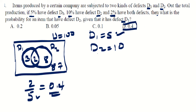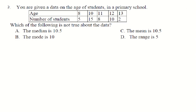The next question: data on the age of students in a primary school — age and number of students are given. Which of the following is NOT true about the data? First, find the total frequency: adding gives 40 students total.